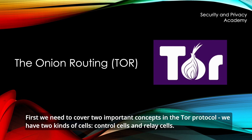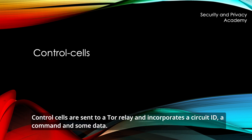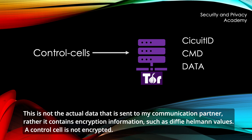First, we need to cover two important concepts in the TOR protocol. We have two kinds of cells: control cells and relay cells. Control cells are sent to a TOR relay and incorporate a circuit ID, a command, and some data. This is not the actual data sent to a communication partner; rather, it contains encryption information such as Diffie-Hellman values.